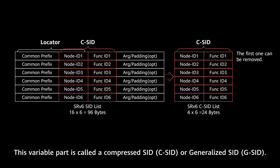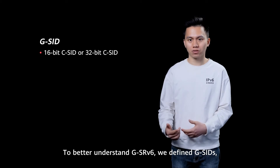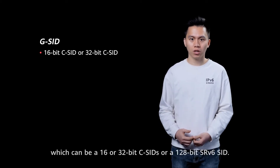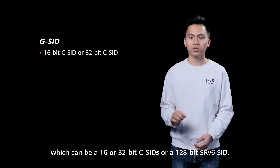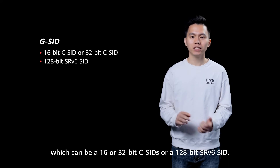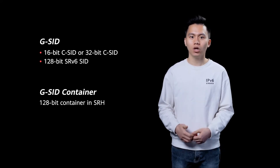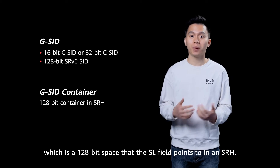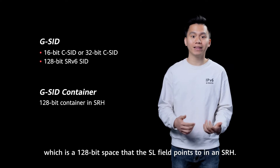The variable part is called a compressed segment, C-SID, or generalized segment, G-SID. To better understand GSRV6, we define a G-SID, which can be a single 16-bit or 32-bit C-SID, or a single 128-bit SRV6 SID. We also define a G-SID container, which is a 128-bit space that the segment left field points to in the SRH.